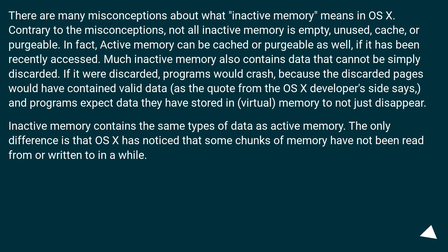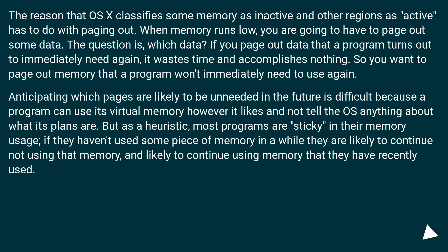Inactive memory contains the same types of data as active memory. The only difference is that OS X has noticed that some chunks of memory have not been read from or written to in a while. The reason OS X classifies some memory as inactive has to do with paging out: when memory runs low, you have to page out some data. The question is which data? If you page out data that a program immediately needs again, it wastes time and accomplishes nothing. So you want to page out memory that a program won't immediately need to use again.